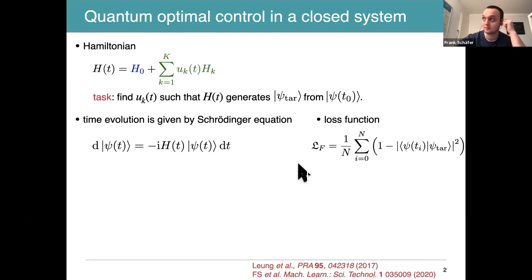The control task can be conveniently reformulated as the minimization of a loss function. To prepare a target state, the infidelity is a very good choice. This is simply a scalar product of the state at time TI with respect to the target state, called the fidelity. The infidelity is one minus this overlap, which measures the similarity of the state with respect to the target state. Minimization of this function achieves reaching the target state.